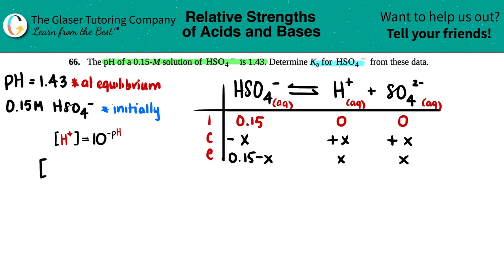If I want to solve for the H+, all I have to do is 10 to the negative 1.43. If the pH was at equilibrium, this H+ concentration is also at equilibrium. So 10 to the negative 1.43. I'm not going to round it just yet. I'm just going to give it a couple of decimals. 0.0372. That's molarity.